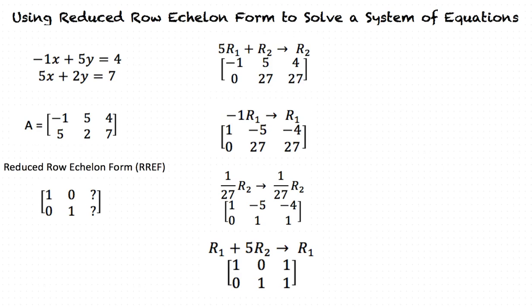Okay, it's in reduced row echelon form, but now what do we do? Now that the matrix is in reduced row echelon form, we can solve the systems of equations. The solution for the matrix will be x is equal to 1 and y is equal to 1.